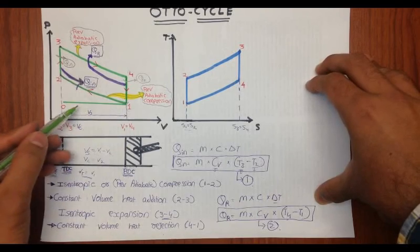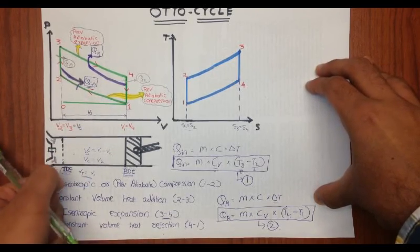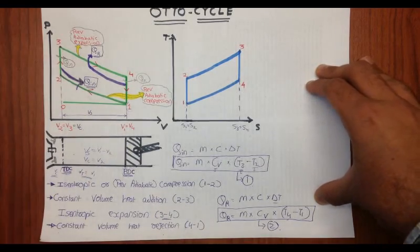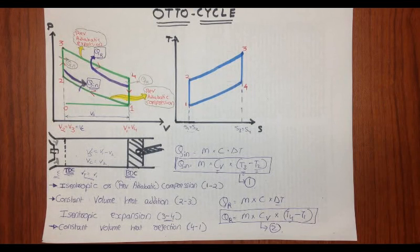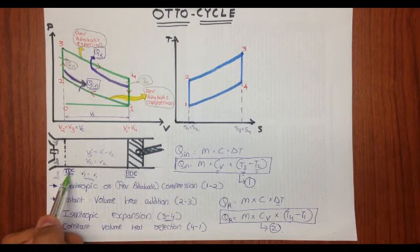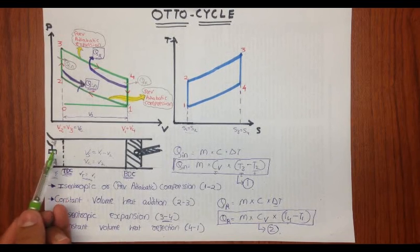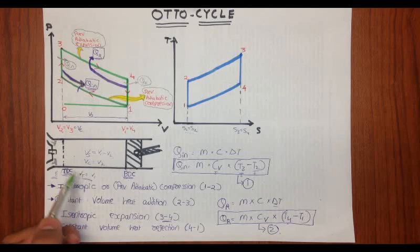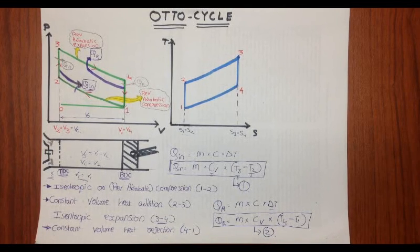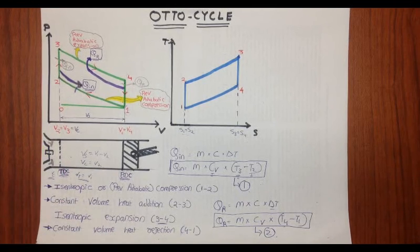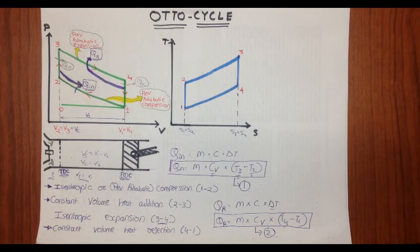In an open loop engine, the piston at BDC moves toward TDC while the exhaust valve is open, expelling residual gases at constant pressure. Once at TDC, the exhaust valve closes and the inlet valve opens; the piston moves from TDC to BDC inducting the air-fuel charge into the cylinder at constant pressure — that is process 0 to 1. In the ideal Otto cycle we assume the engine operates in a closed loop.